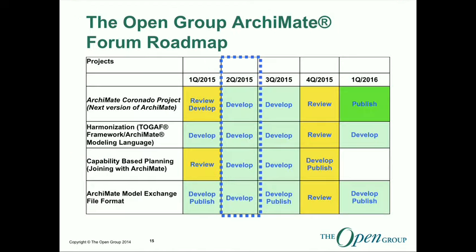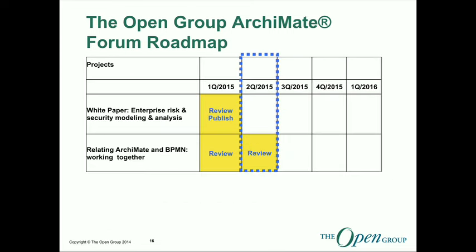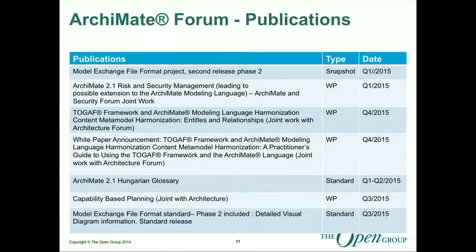The roadmap for the Archimate forum covers the things they're working on: the next version of Archimate is coming out in the first quarter — so this time next year — the harmonisation programme, Project Harmony with TOGAF, and a bunch of other things. I'm going to flash through them so I can get through in the time, along with a bunch of publications.